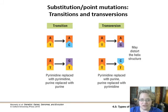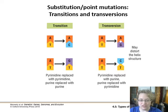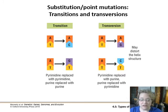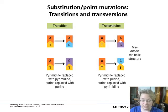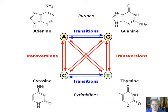A substitution is where a base is changed — it doesn't add or delete anything, just a one-to-one change. There are two types: a transition, where a pyrimidine is replaced with the other pyrimidine or a purine with the other purine; and a transversion, where you switch types — two pyrimidines or two purines trying to pair together — which contorts the helix shape more.